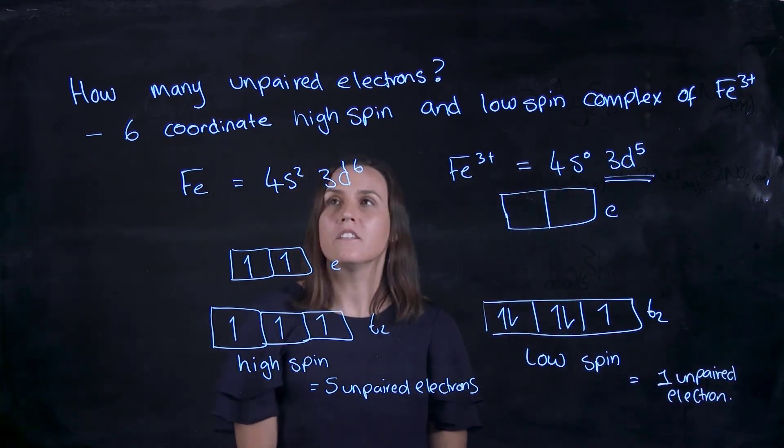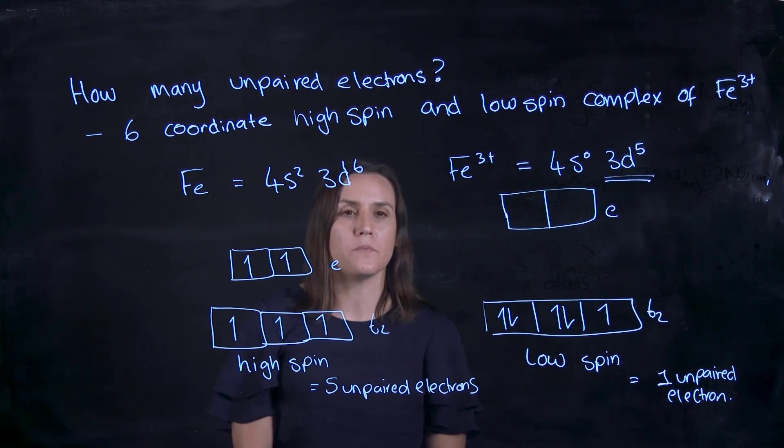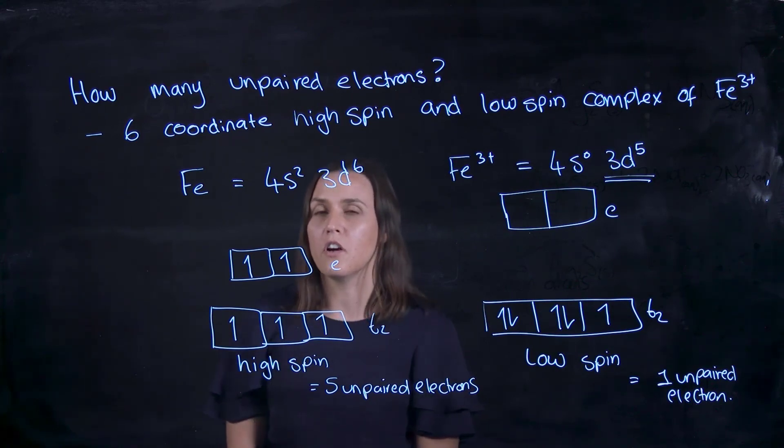OK, so that's how many unpaired electrons in high spin and low spin octahedral complexes.